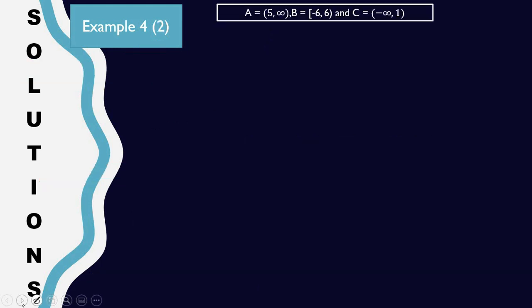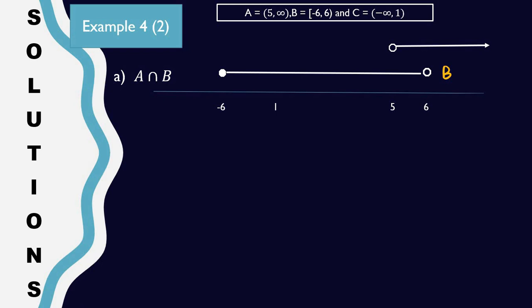Part 2: we have A = (5, ∞), B = [-6, 6], and C = (-∞, 1). We are looking for A intersect with B first. You should draw them one by one: -6 up until 6, that one is B. Another one is 5 to infinity.